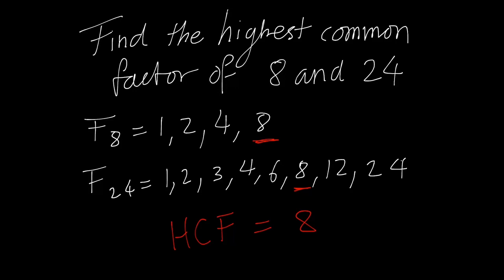If we were to find the highest common factor of 8 and 24, we would have to list the factors of 8 and 24 first. For 8: 1, 2, 4, 8. And then the factors of 24. We need to find which factor is common to both and is the highest. There's a 1 common to both, a 2 common to both, a 4 common to both, and an 8 common to both. Since 8 is the highest, we say 8 is the highest common factor.